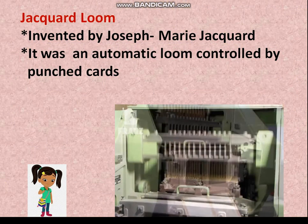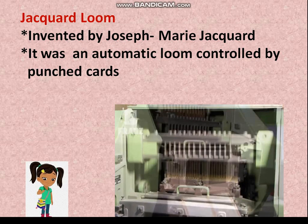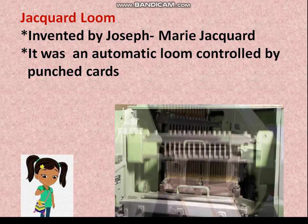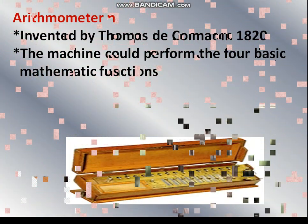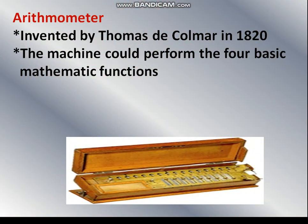The Jacquard Loom was invented by Joseph Marie Jacquard. It was an automatic loom controlled by punched cards. The Arithmometer was invented by Thomas de Colmar in 1820. The machine could perform the four basic mathematical functions.